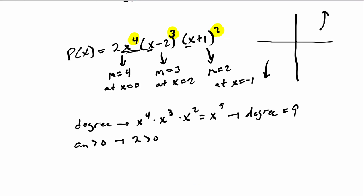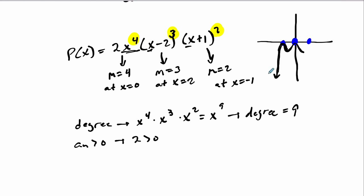It has roots at zero, two, and negative one. Coming up from the bottom, at negative one the multiplicity is even so it bounces back. At zero the multiplicity is even again, so it comes up, dips down, and bounces back. At two the multiplicity is odd, so the polynomial crosses the axis there.